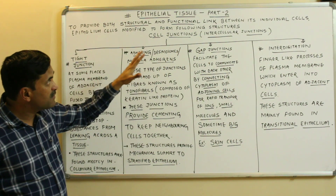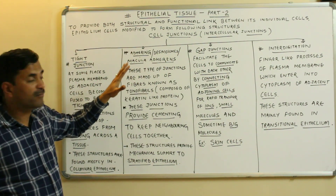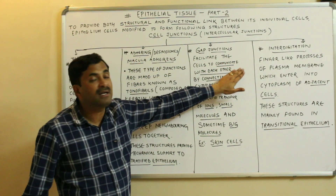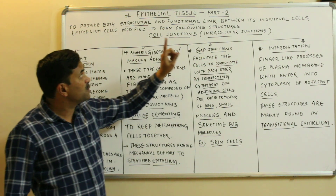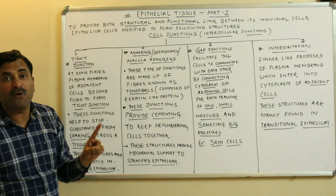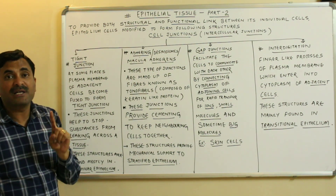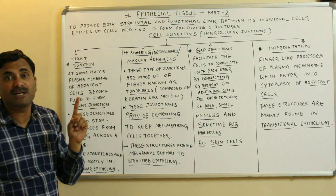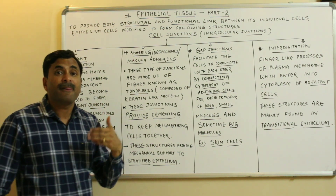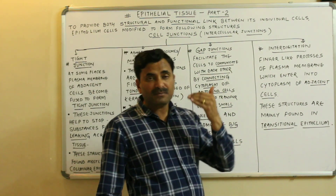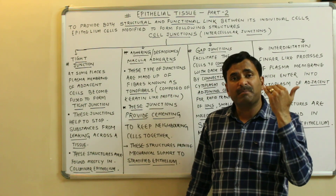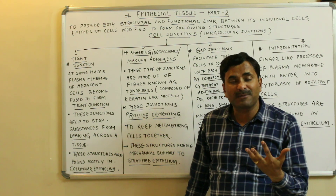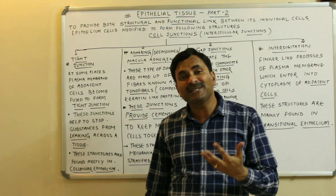So these were the four types of cell junctions: tight junctions, adhering junctions, gap junctions, and interdigitation. This was part two of the epithelial tissue series. Part one is also available, and more videos on biology topics are coming. Thanks a lot for watching.